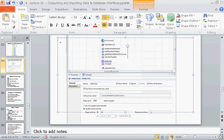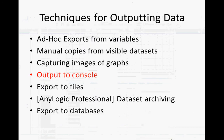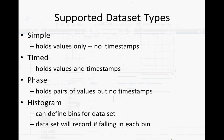Let's talk about a few other essentials. We've talked about data sets — there are several types: simple data sets, time data sets which we've been using, phase data sets which hold pairs of values. These are useful for state space analysis and creation of phase diagrams. And histograms, which record — you define bins and record the number falling into each bin.